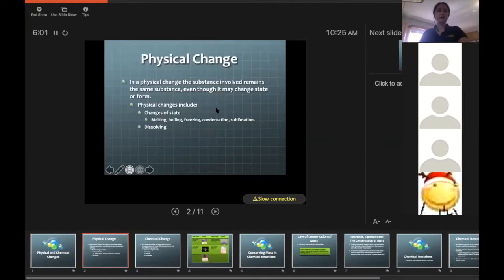Okay, so remember a physical change involves a change where the substance doesn't change its chemical makeup, it just goes from one form to another. For example, melting or freezing, condensation, which is when it goes from a gas to a liquid, and sublimation, that might be a new word, is when it goes from a solid directly to a gas. Dissolving is also considered a physical change.